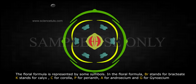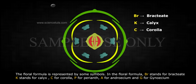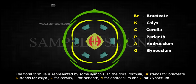The floral formula is represented by some symbols. In the floral formula, BR stands for bracteate, K stands for calyx, C for corolla, P for perianth, A for androecium, and G for gynoecium.